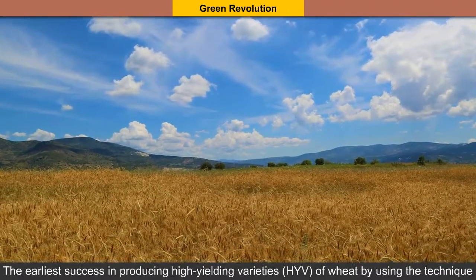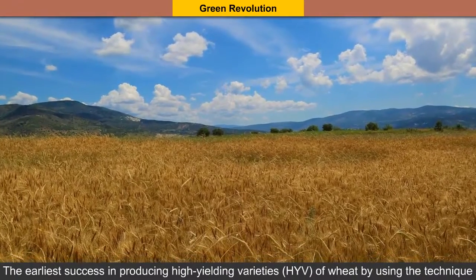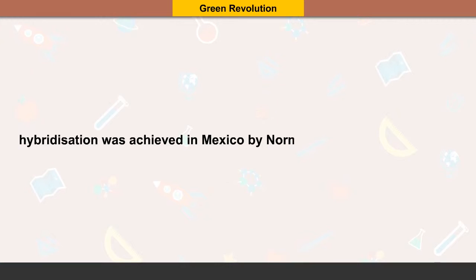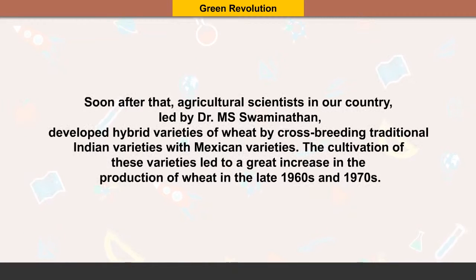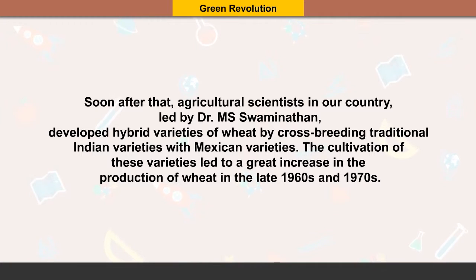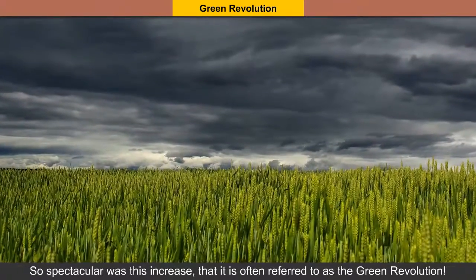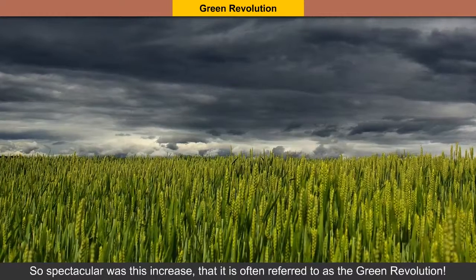Green Revolution: The earliest success in producing high-yielding varieties (HYV) of wheat by using hybridization was achieved in Mexico by Norman E. Borlaug in the 1960s. Soon after, agricultural scientists in our country, led by Dr. M.S. Swaminathan, developed hybrid varieties of wheat by cross-breeding traditional Indian varieties with Mexican varieties. The cultivation of these varieties led to a great increase in the production of wheat in the late 1960s and 1970s. So spectacular was this increase that it is often referred to as the Green Revolution.